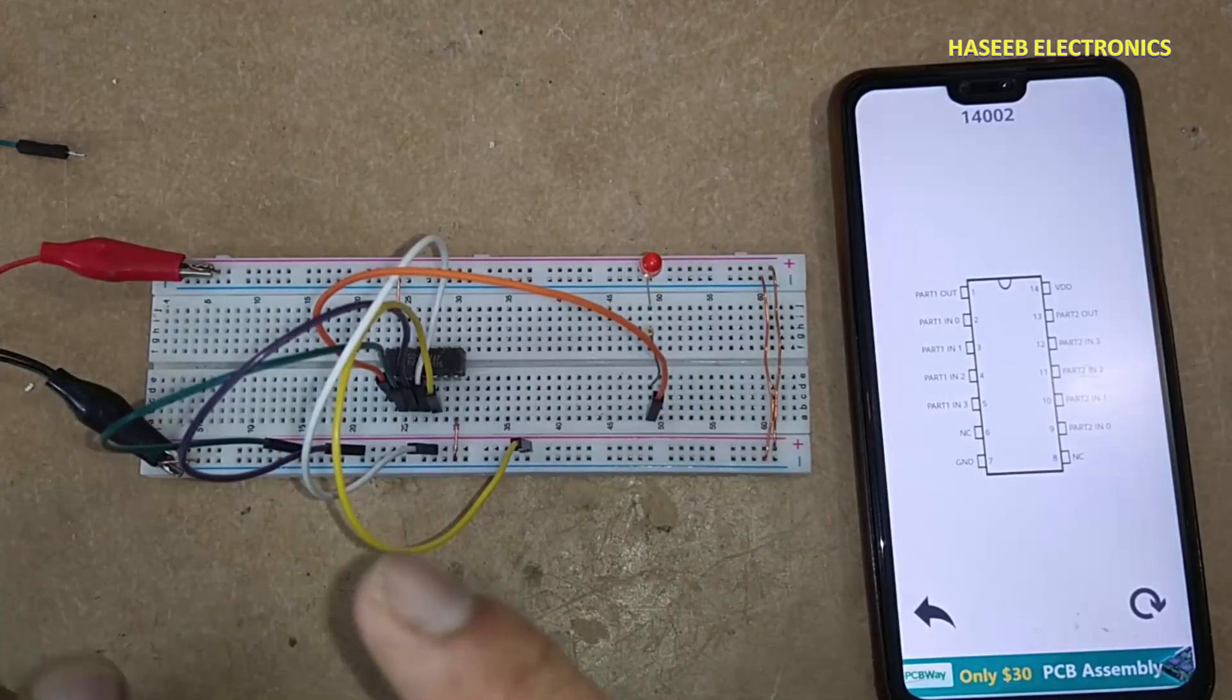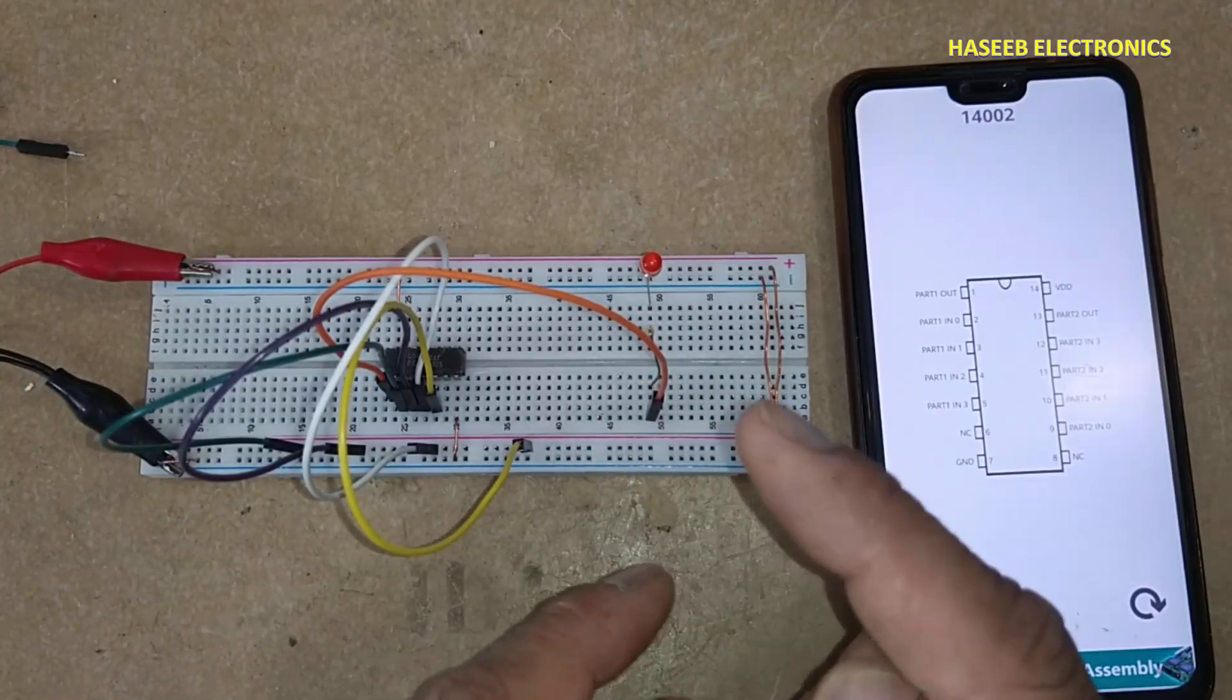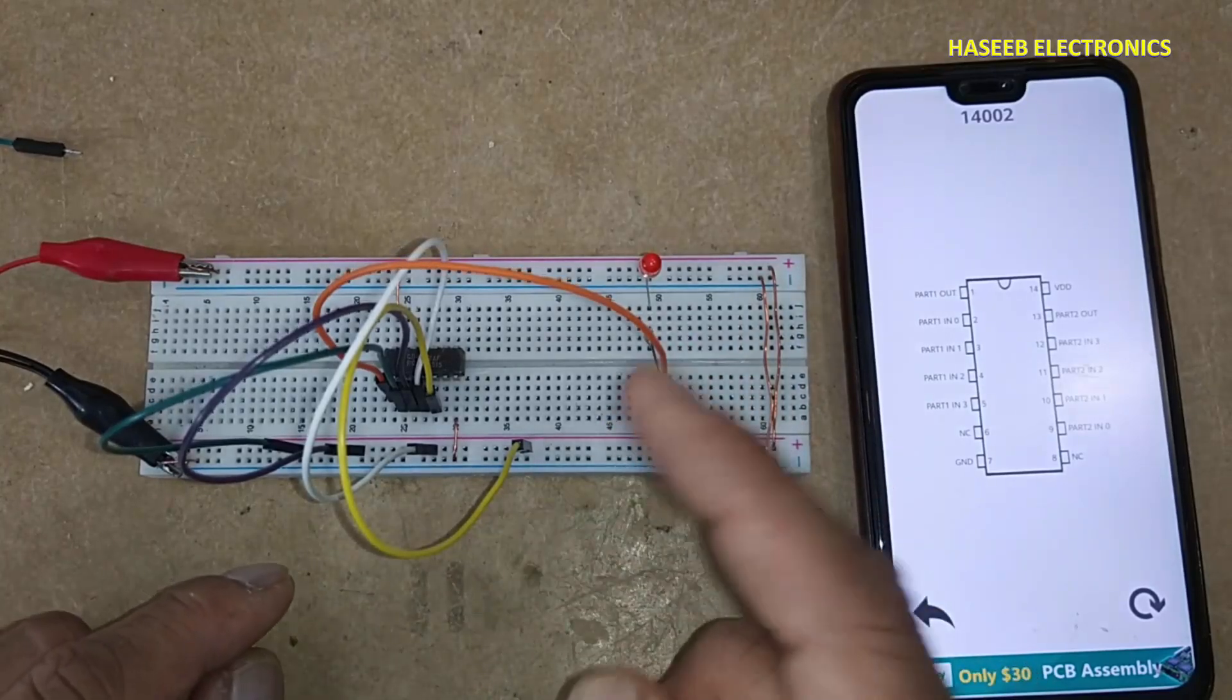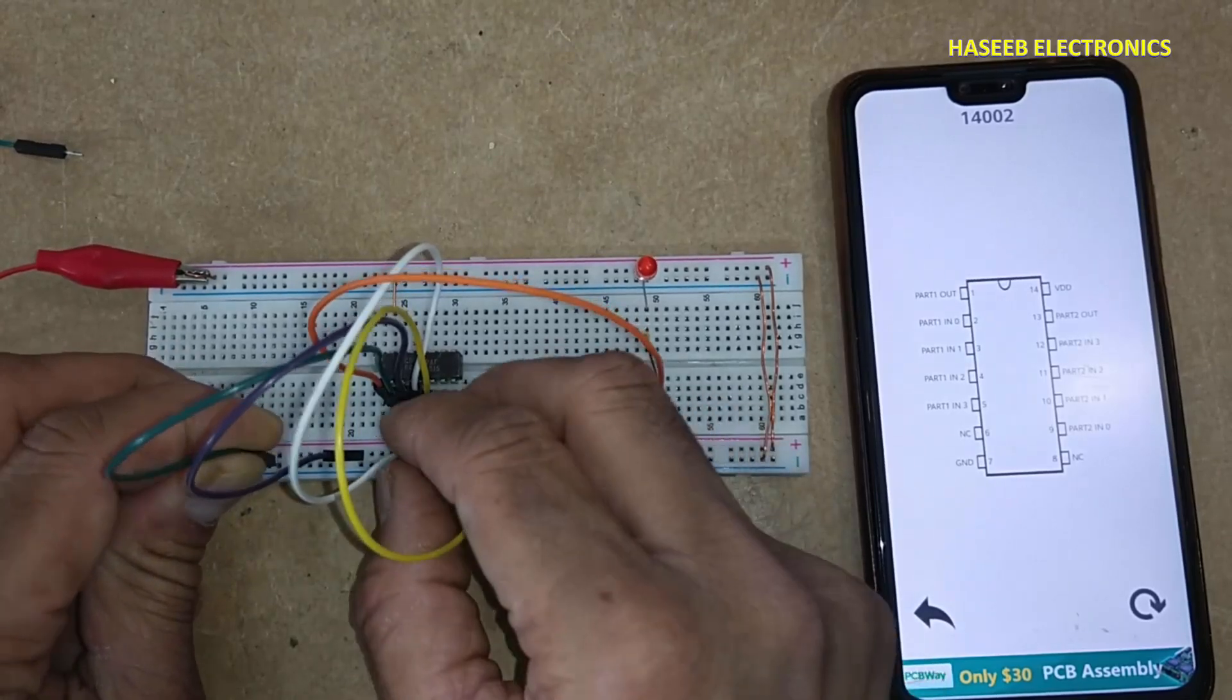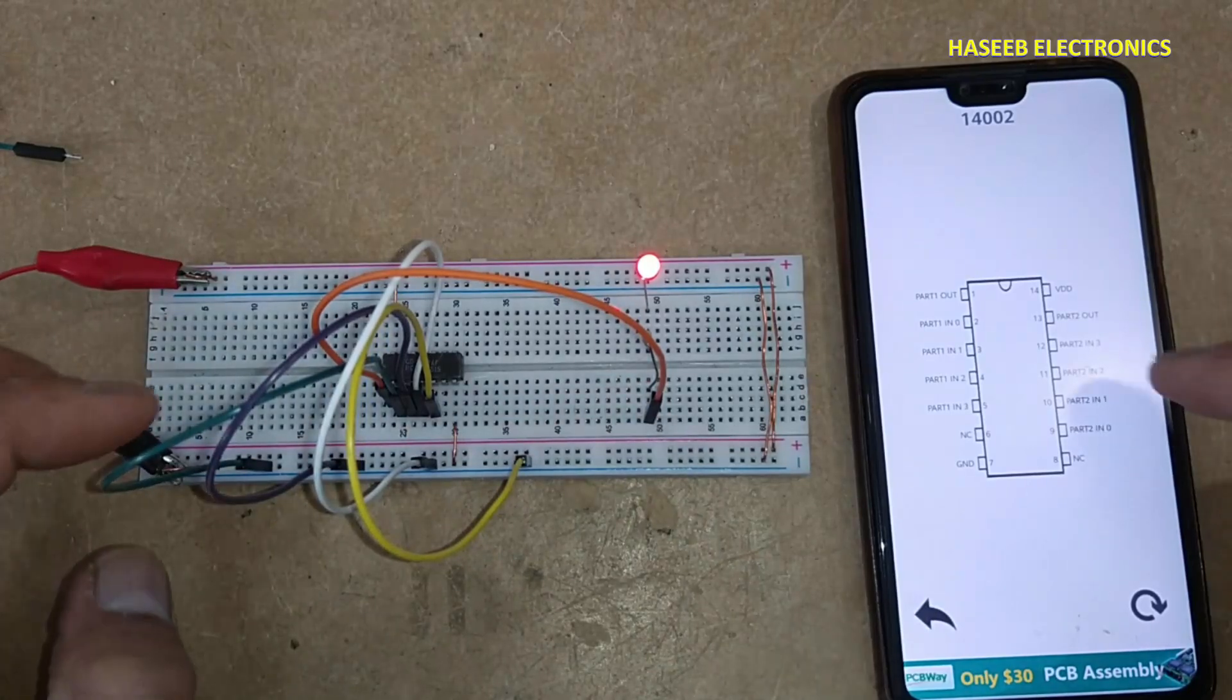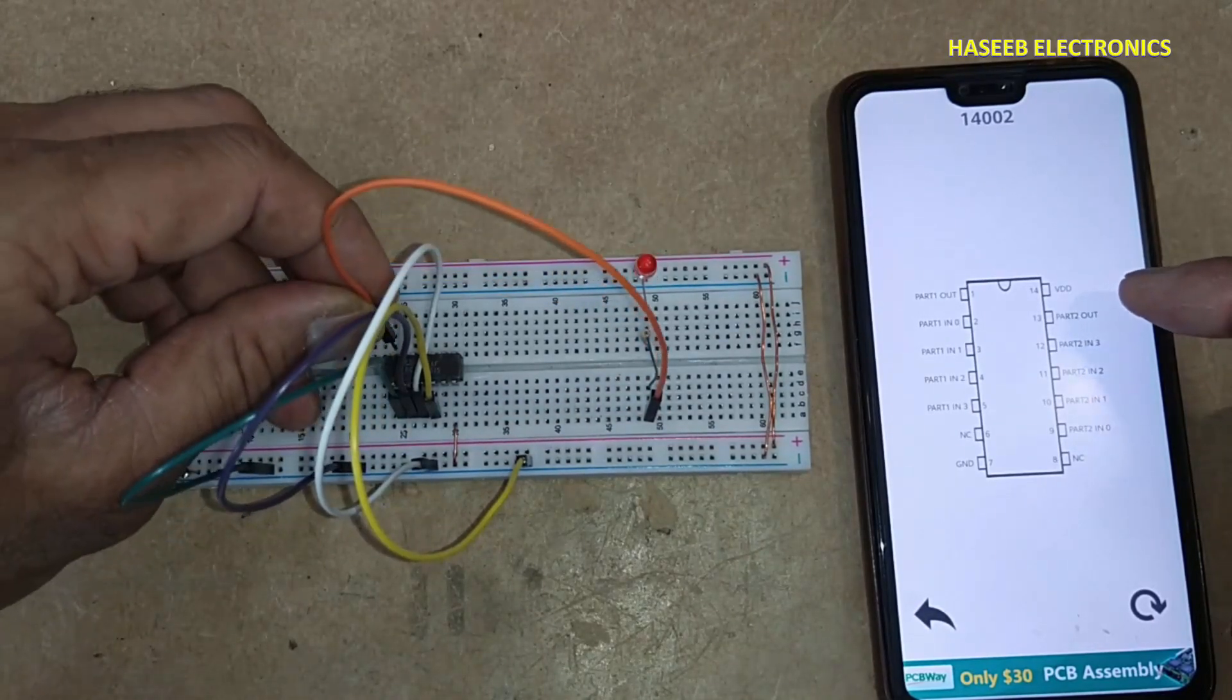In a NOR gate, when any input or all inputs are high, output is low. When all inputs are low, the output is high. This is the function of a NOR gate. It is opposite to an OR gate. Let's check the second gate, pin 13 output.